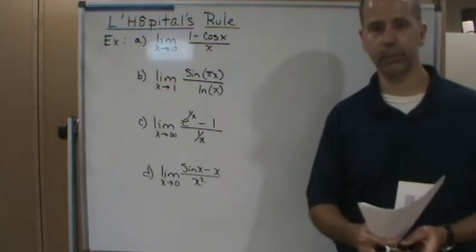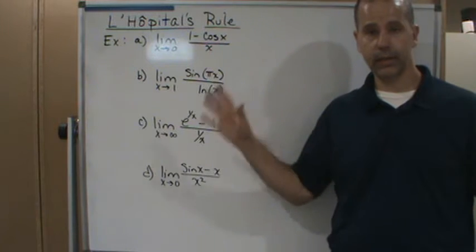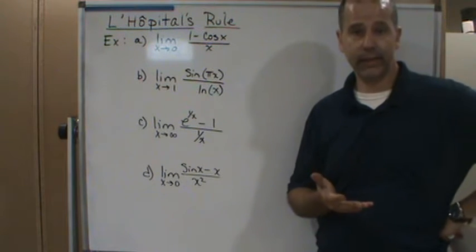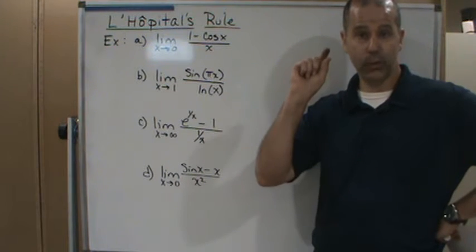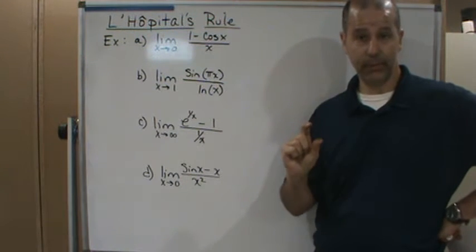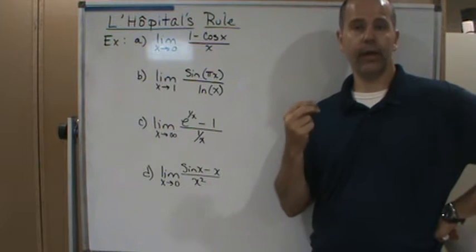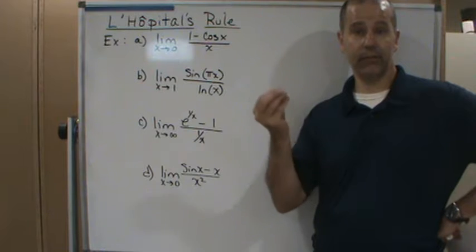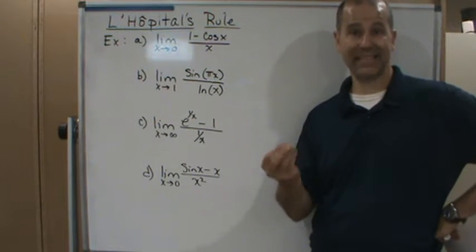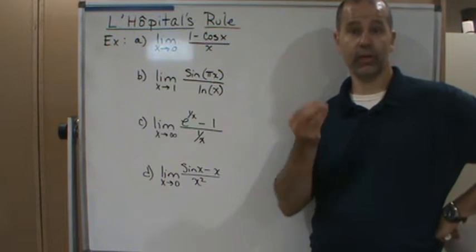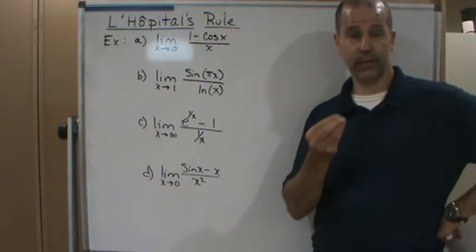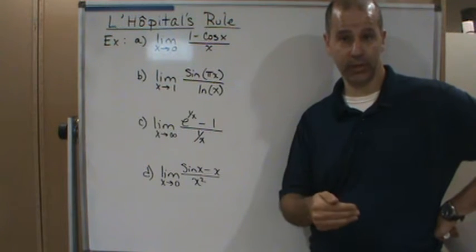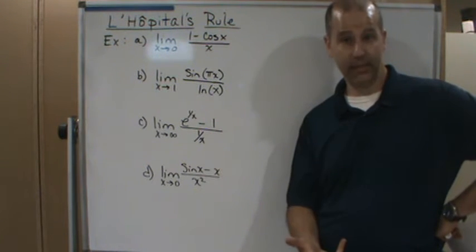So now what we're going to do is apply L'Hôpital's rule to these cases. If we get the indeterminate form 0 over 0 by evaluating the limit of the top and the bottom, and they both go to 0, then by using L'Hôpital's rule, the limit of the original quotient will be the same as the limit of the quotient of the derivatives of the top and the bottom.